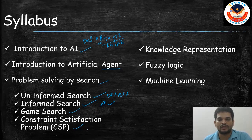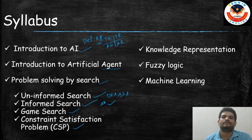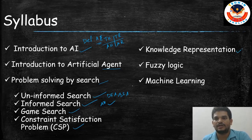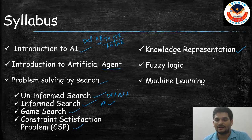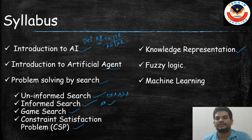Then we have Knowledge Representation. In knowledge representation, we will look at first-order predicate logic, what is first-order logic, what is reasoning, and related topics.